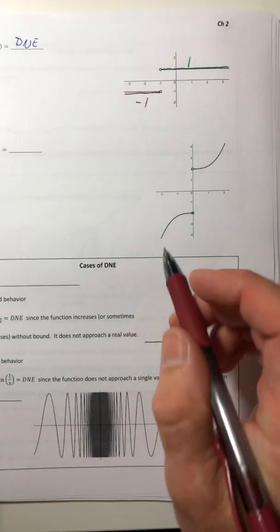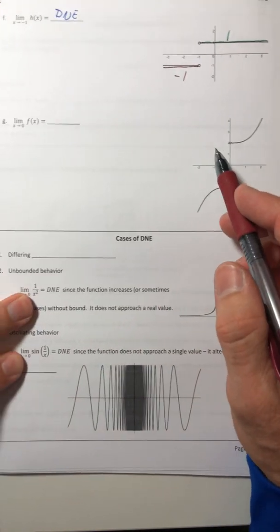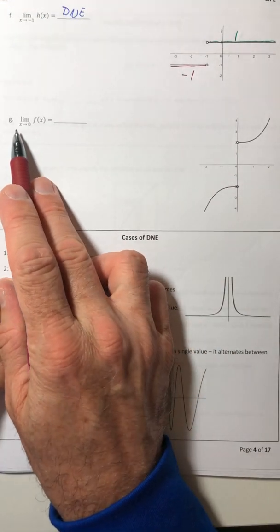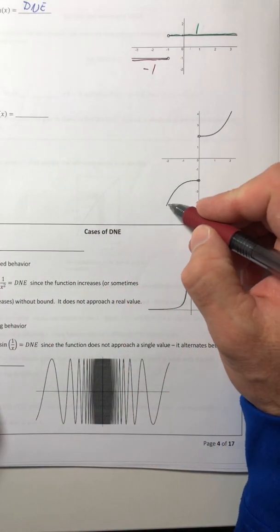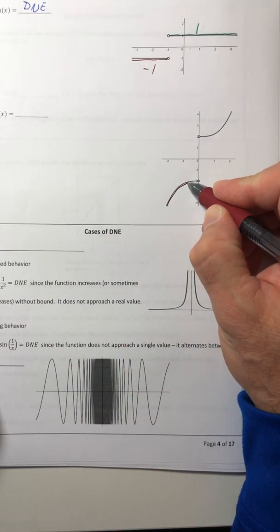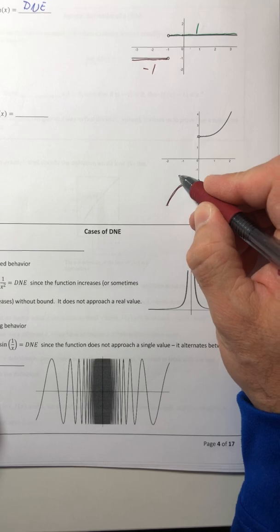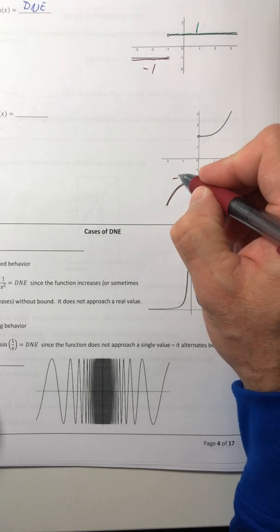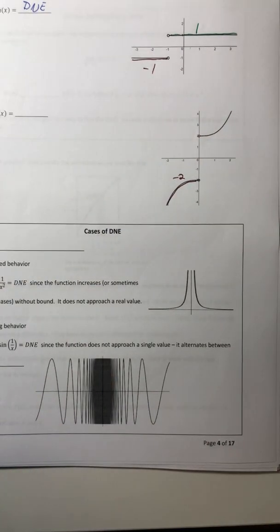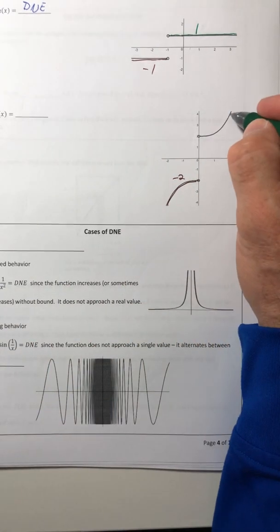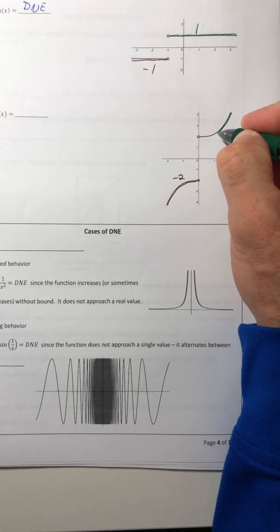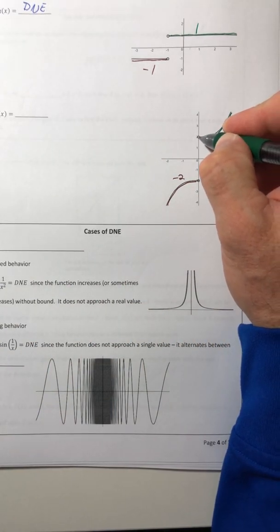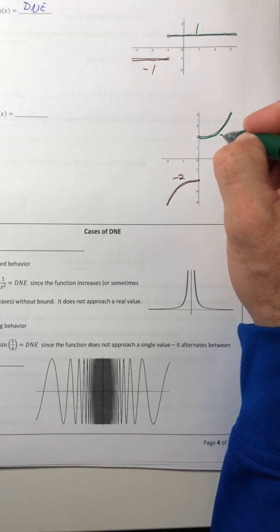For part G, the same thing is happening. As X approaches zero, if you trace in over on the left side, it looks like you're approaching negative 2. And from the right side as you approach X equals zero, the Y value it looks like you're gonna run into is positive 2.